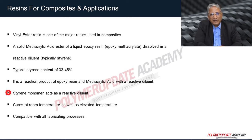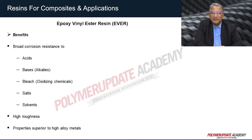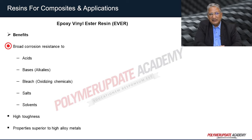Styrene monomers act as a reactive diluent. Curing can take place at room temperature as well as elevated temperature, and it is compatible with all fabrication processes. Epoxy vinyl ester has different benefits compared to unsaturated polyester resin, bridging the gap between unsaturated polyester resin and high performance epoxy resin. It offers broad corrosion resistance to acids, bases (mainly alkalis), bleach (oxidizing chemicals), salts, and solvent environments. It also has high toughness and properties superior to lower metals.